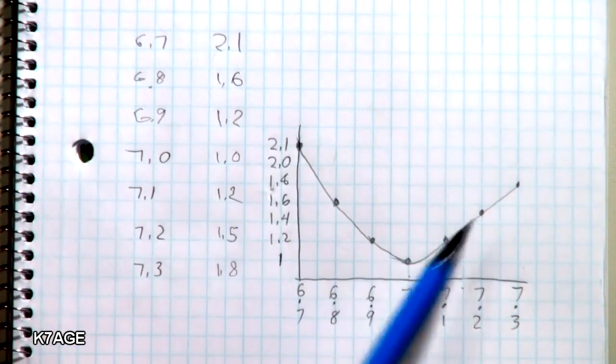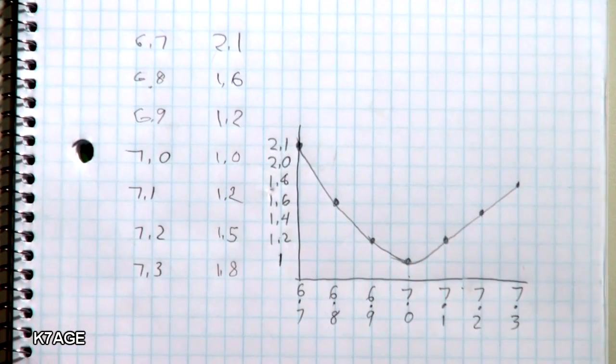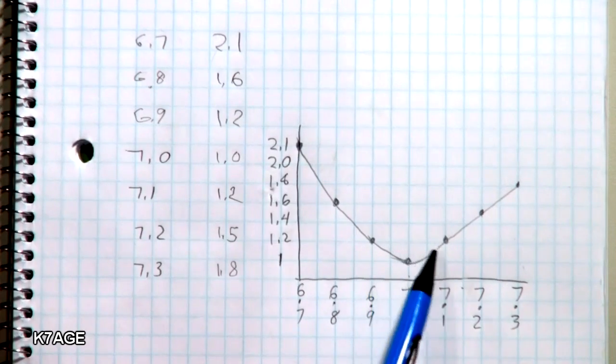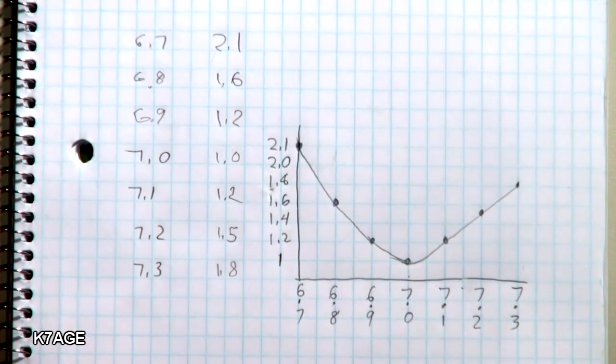So I've taken my data versus frequency and plotted out a graph. Real simple. And I can see that my 7.0 is where it's resonant. And again if I wanted to shift this graph higher. I'd have to shorten up the antenna.